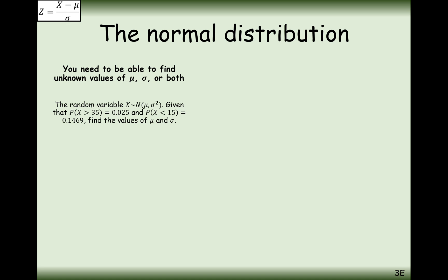Now let's look at a question where we need to find both mu and sigma. The random variable X is normally distributed with unknown mean mu and unknown standard deviation sigma. We're given two pieces of information: the probability of X being greater than 35 is 0.025, and the probability of X being less than 15 is 0.1469. With two unknowns and two conditions, we'll use simultaneous equations.